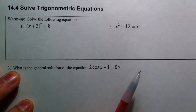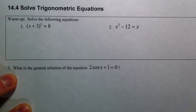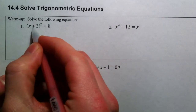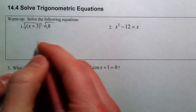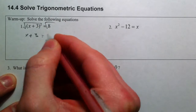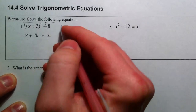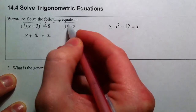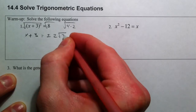All right, time to solve some trig equations. We're going to do this minus any trig identities. And to warm up, remember how to do this with quadratics: if you have something squared, to undo it, you can take the square root of both sides. And when you do that, you have to remember that you end up with a plus or a minus. Square root of 8 is the same as square root of 4 times the square root of 2. The square root of 4 is 2, so you end up with 2 square root of 2.